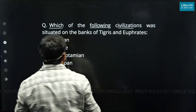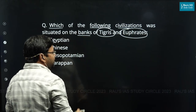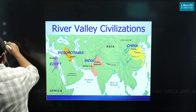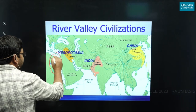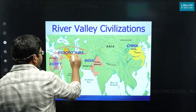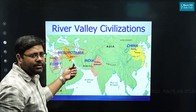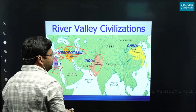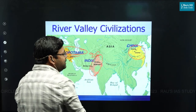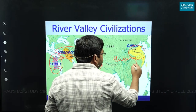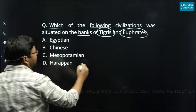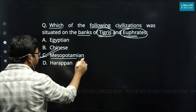The second question asks which civilization was situated on the banks of the Tigris and Euphrates. In ancient times there were four great civilizations: Egypt on the Nile, Mesopotamia on the Euphrates and Tigris, the Indus Valley Civilization on the Indus around the Indian subcontinent, and the Chinese civilization on the Huanghe or Yellow River. So the answer is Mesopotamia.